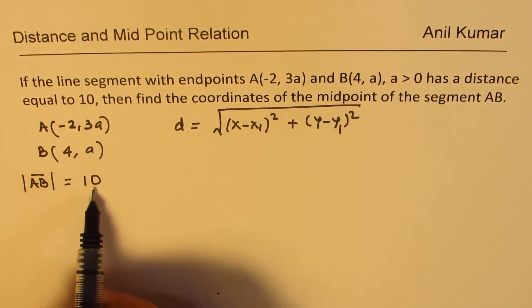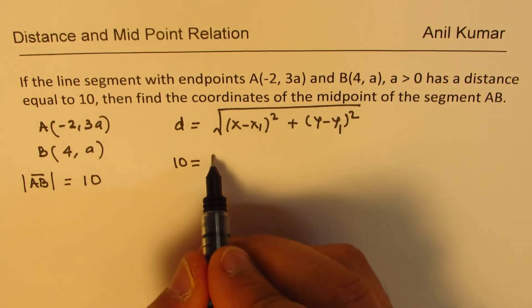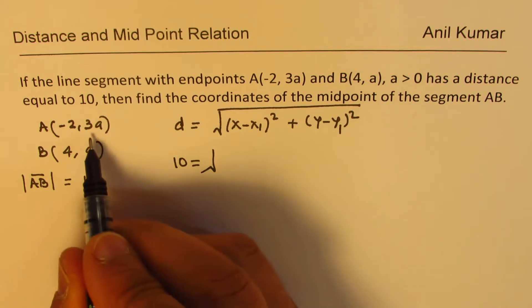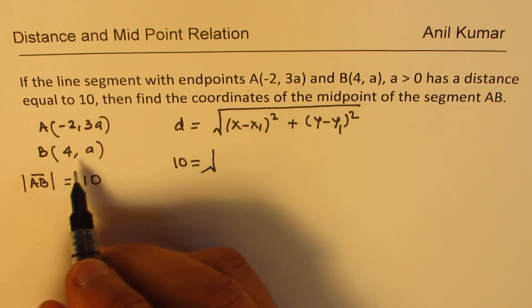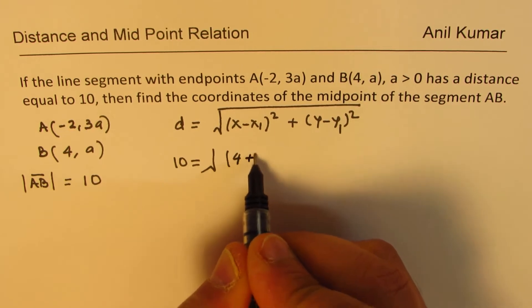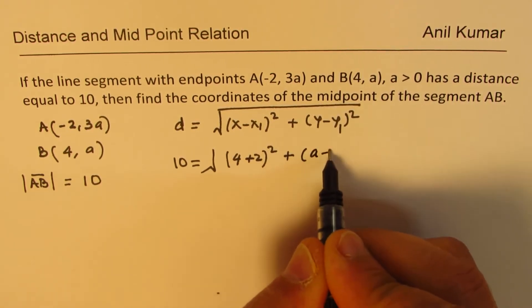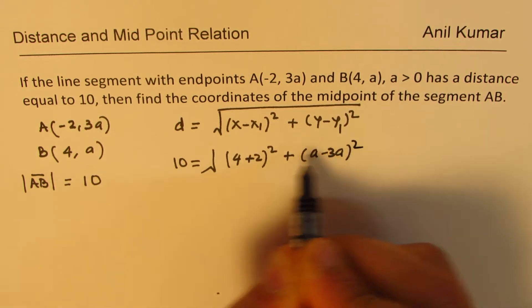In this case, we are given the distance as 10. Let's substitute: 10 = √[(4 - (-2))² + (a - 3a)²], which gives me 10 = √[(6)² + (-2a)²].